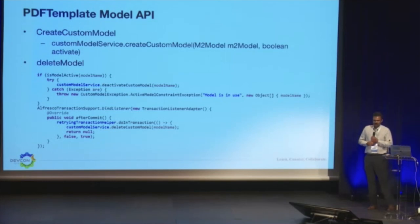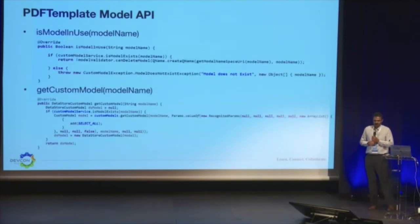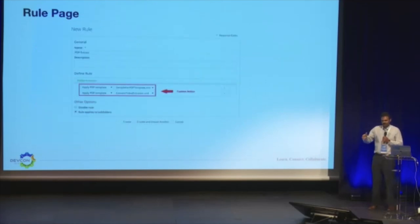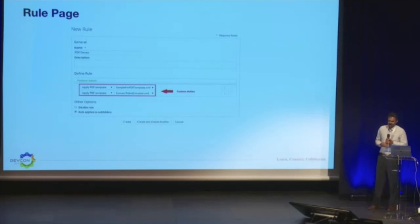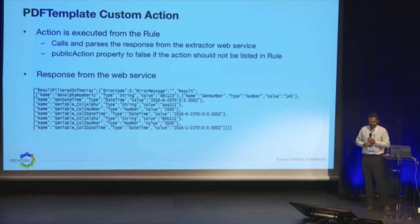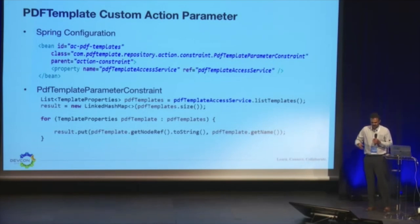The template XML content is saved into Content Services — we're interested in the key name and its data type. Tables have a different structure. We create the content model from this information; table data types are multi-valued while others are not. The REST API is called from the Acrobat add-on. For the content model, you cannot delete keys, so we create a new content model and update the association of the template to the new one. For deleting a model, you must first deactivate it and then, only after commit, delete it.